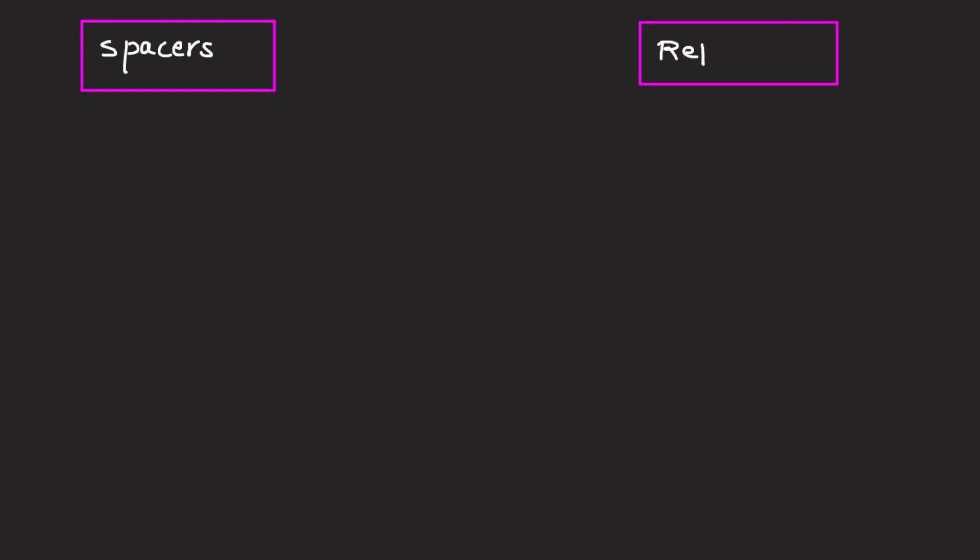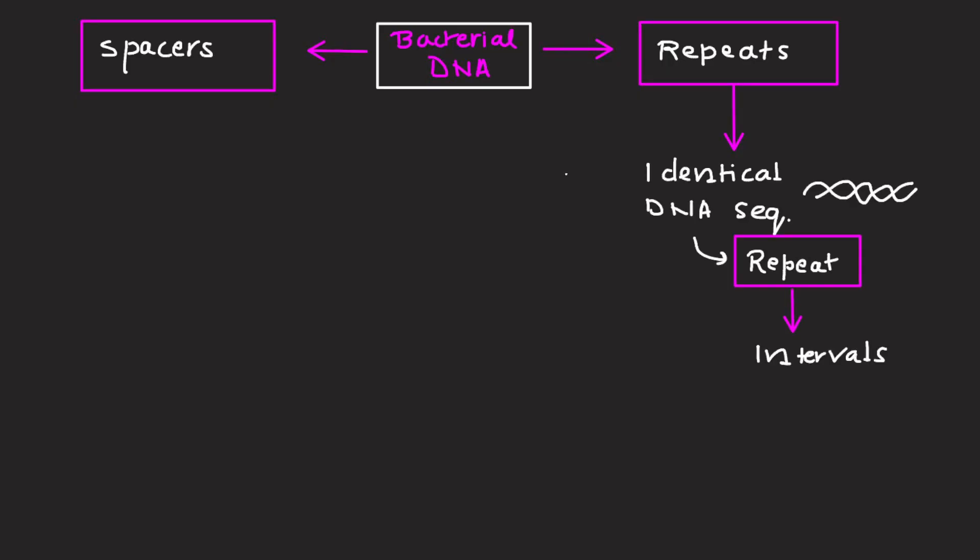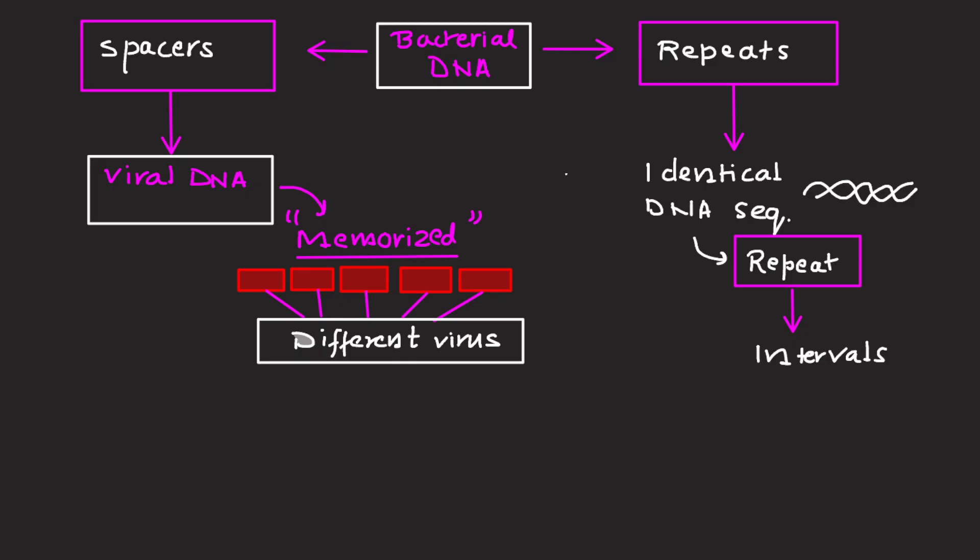Now let's understand what are spacers and repeats. Inside the CRISPR region, the bacterial DNA has two main parts. Repeats - these are identical DNA sequences that repeat at a regular interval. Spacers - these are the viral DNA pieces that the bacteria have memorized. Each spacer comes from a different virus.